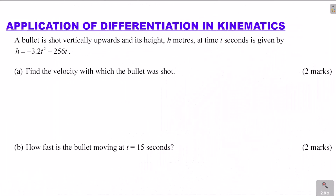Let's do this question on application of differentiation in kinematics. A bullet is shot vertically upwards and its height h meters at time t seconds is given by h equals negative 3.2t squared plus 256t.